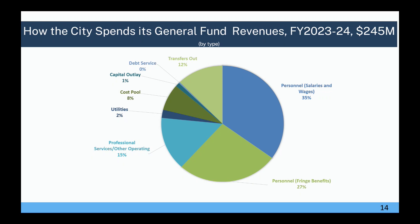The next slides cover how the general fund spends its money — $245 million for fiscal year 2023-2024. How that breaks out by type: 35% personnel salaries and wages, 27% personnel fringe benefits, 12% transfers out, 15% professional services and other operating, 2% utilities, 8% cost pool, and 1% capital outlay, with less than 0% debt service.